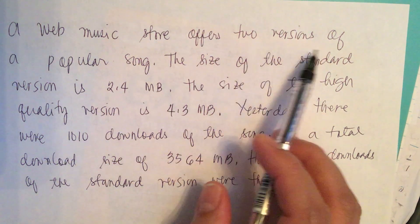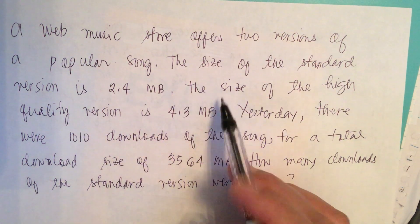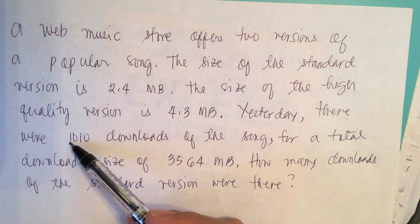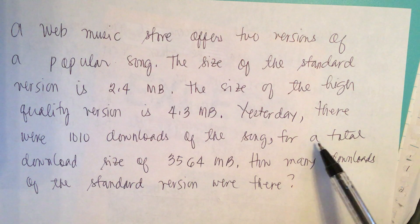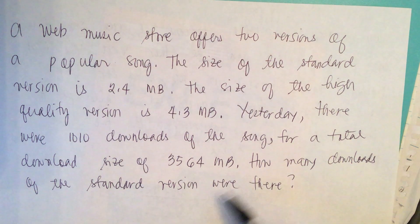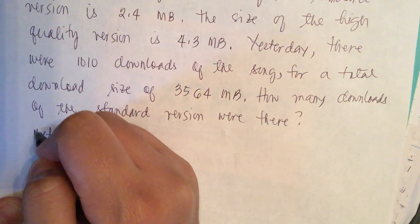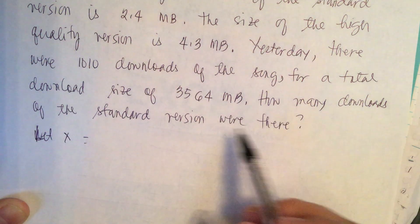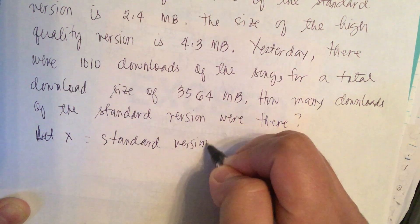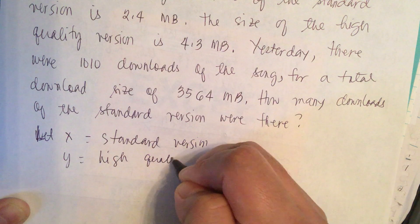A web music store offers two versions of a popular song. The standard version is 2.4 megabytes and the high quality version is 4.3 megabytes. Yesterday there were 1010 downloads for a total download size of 3564 megabytes. We let x equal the standard version and y equal the high quality version.